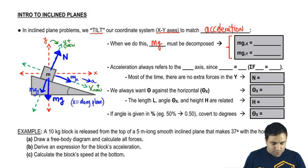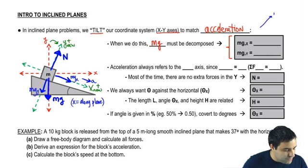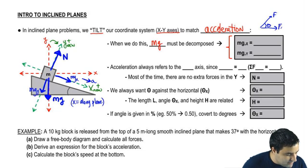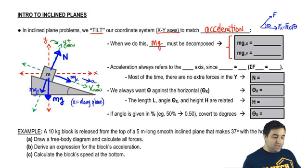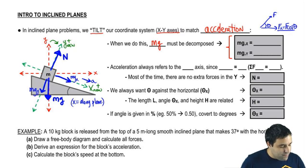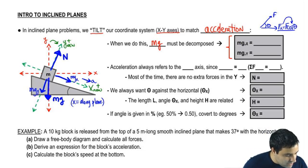So mg has to be decomposed into mgx and mgy. You might remember from vector decomposition that if I have a force and the angle is here, fx is f cosine of theta. So you might be thinking maybe mgx would be mg cosine of theta. And what I want you to remember is that in the inclined plane, it's the opposite.